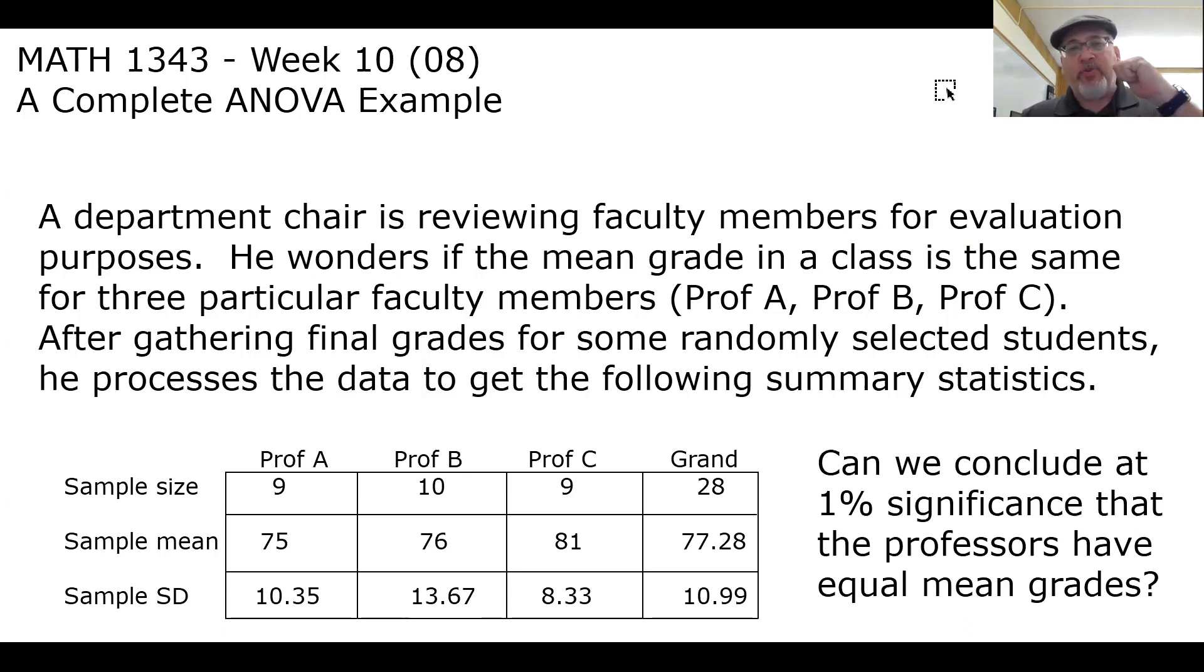Before we even get started, the first thing we should do is analyze the situation to see if the F distribution is appropriate. There are two things we have to check: the samples and the variabilities. Let's start with the variabilities, namely the standard deviations. The criteria for the variabilities is that one of them cannot be more than twice another. We do that by checking the lowest against the highest. Let's check the lowest standard deviation, 8.33 versus the highest, 13.67. If you double 8.33, you get 16.66. 13.67 is not bigger than that. So our variabilities are reasonably close to each other. We're okay there.